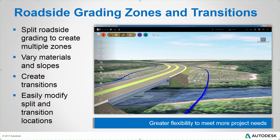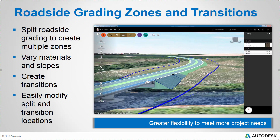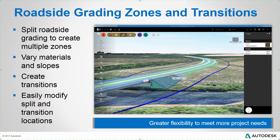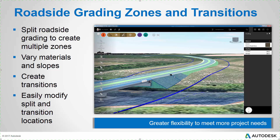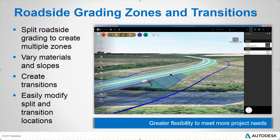Once the grading zones and transitions are in place, it's very easy to make modifications to them. I can click and drag them graphically to change their positions, or I can even enter in a station. Why is it important to be able to split roadside grading? It allows greater flexibility to meet more road design project needs.